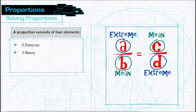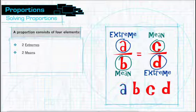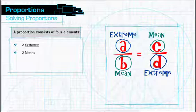You can remember these terms because if you list them out as A, B, C, and D, both A and D are on the extreme ends. In order to accurately compare a proportion, the cross products must be equal.